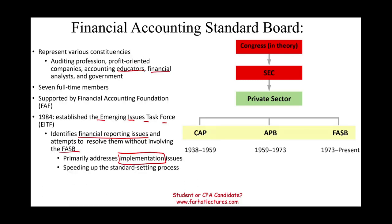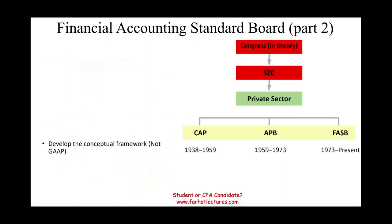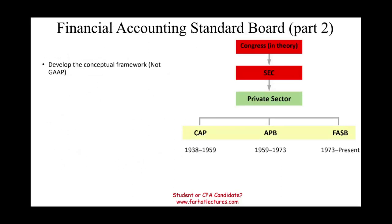The EITF primarily addresses implementation issues and provides clarification on how to implement FASB rules, speeding up the standard-setting process. Once EITF rulings are ratified by FASB, they are considered GAAP — FASB has the final say. FASB also developed the Conceptual Framework, which is not GAAP itself, but rather general rules to follow in all situations rather than a piecemeal approach. The Conceptual Framework will be covered in a separate recording.